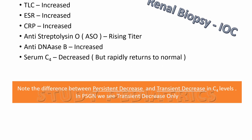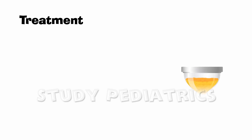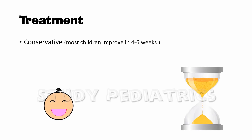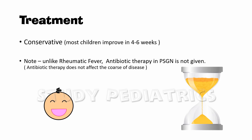The treatment for PSGN is simple — watchful waiting. Conservative management is done and most patients recover fully within 4 to 6 weeks. Unlike rheumatic fever, antibiotic therapy in PSGN is not given, since it does not affect the course of the disease.